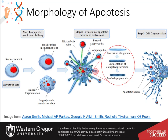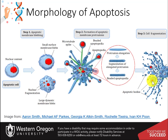Blebbing is one of the defined features of apoptosis. During apoptosis, or programmed cell death, the cell's cytoskeleton breaks up and causes the membrane to bulge outward. The bulges separate from the cell, taking a portion of cytoplasm with them, to become known as apoptotic blebs. Phagocytic cells eventually consume these fragments, and the components are recycled.